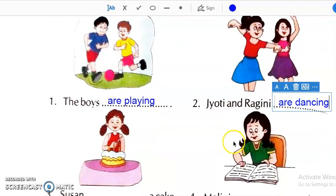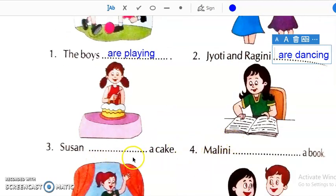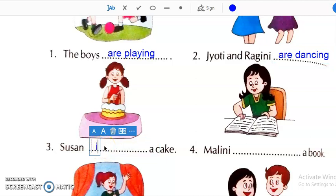Then, next one Susan dash a cake. Susan kya kar rahi hai? She is eating. So, here we will write is eating.